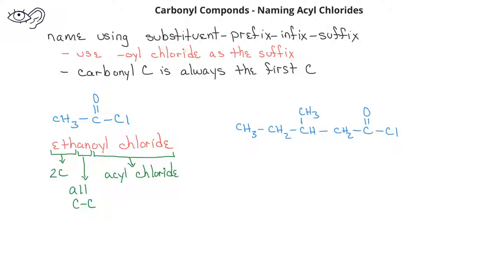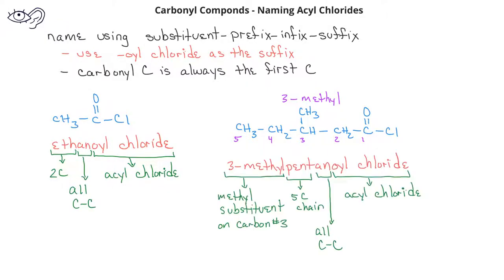Let's look at this slightly more complex acyl chloride. We notice that it is a five-carbon chain, including the carbonyl carbon, and it has a methyl substituent on the third carbon. The name of this compound would be 3-methylpentanoyl chloride.